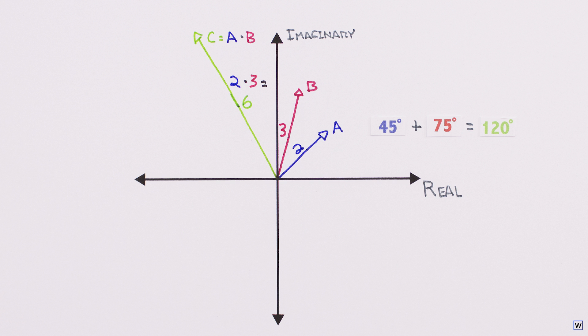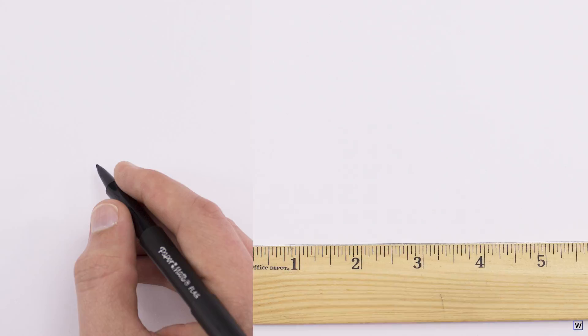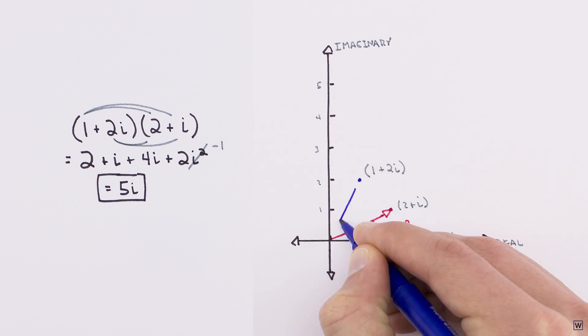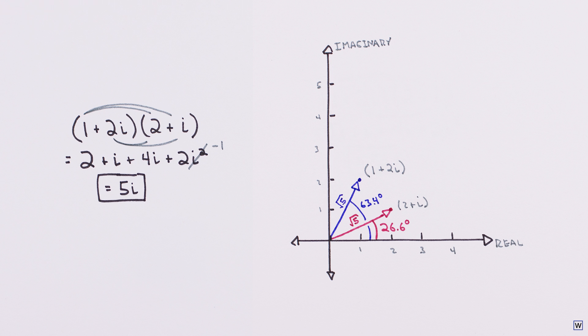We now have completely separate, but completely equivalent interpretations of complex multiplication. To multiply two complex numbers together, we can follow the rules of algebra, or we can find each number's distance from the origin and angle to the real axis on the complex plane, and multiply and add each.